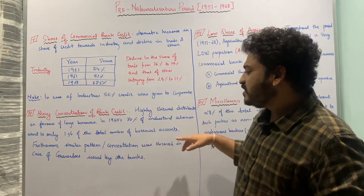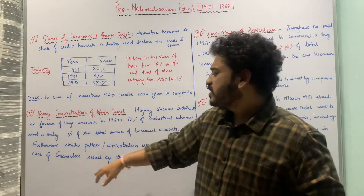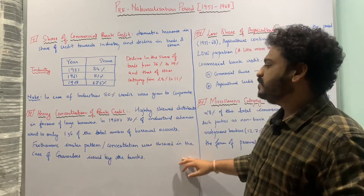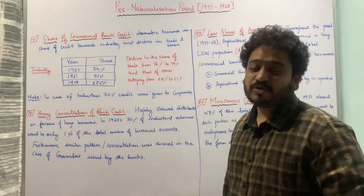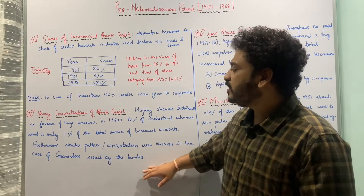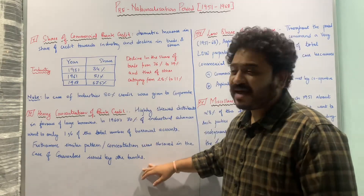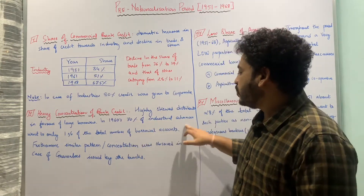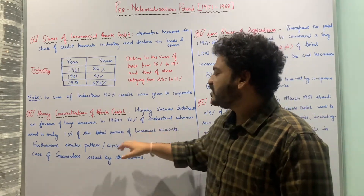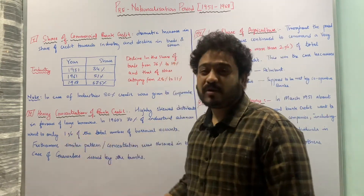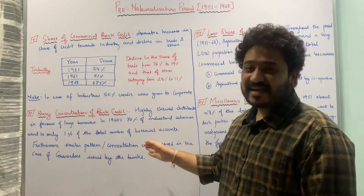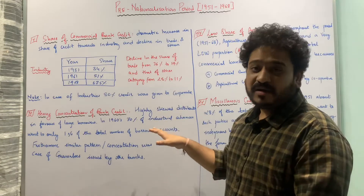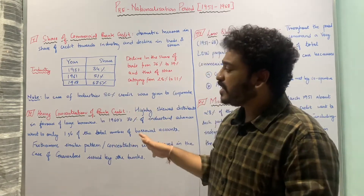A similar pattern of concentration was also observed in the case of guarantees issued by the banks. So it was not only in terms of credits but also in terms of guarantees that heavy concentration toward only 1% of borrowable accounts was visible. This is how the pre-nationalization period in terms of commercial banking credit looks.